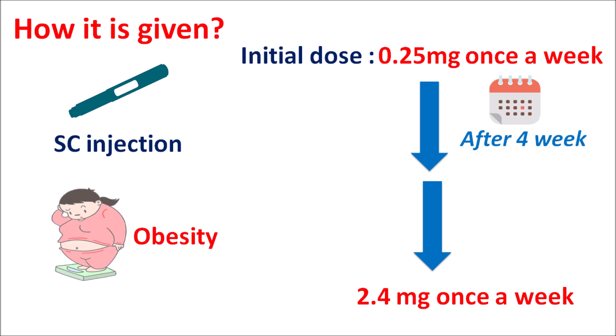In summary, semaglutide is a long-acting GLP-1 receptor agonist that is orally available to control type 2 diabetes mellitus and is also available as subcutaneous injection for both diabetes and obesity management. Pancreatitis is one of the important side effects observed with this drug. It can also increase the risk of thyroid cancer, which is why it is not used as a first-line therapy but can be combined with other anti-diabetic agents to produce better control of blood glucose levels.